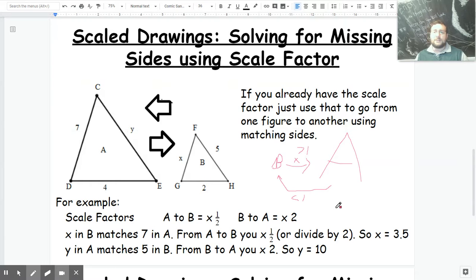We also talked about that to find a scale factor, all you have to do is get the destination and divide by the origin. So in this example, if I'm going from B to A, the destination is 4 divided by 2, which means my scale factor would be times 2 to go this way.